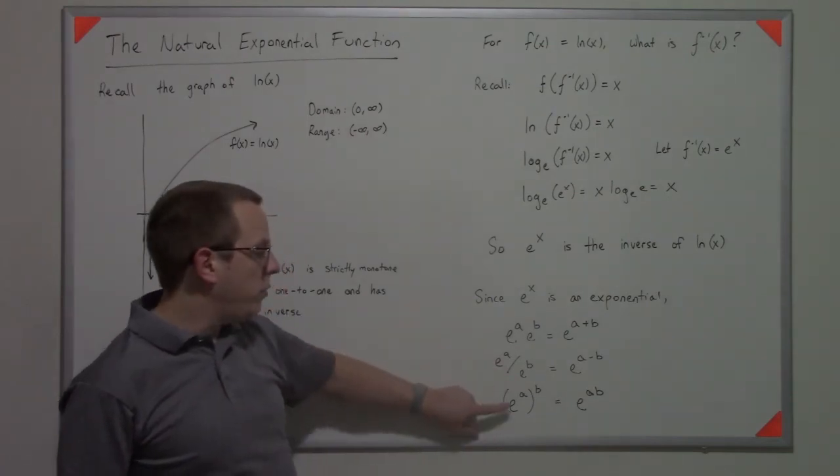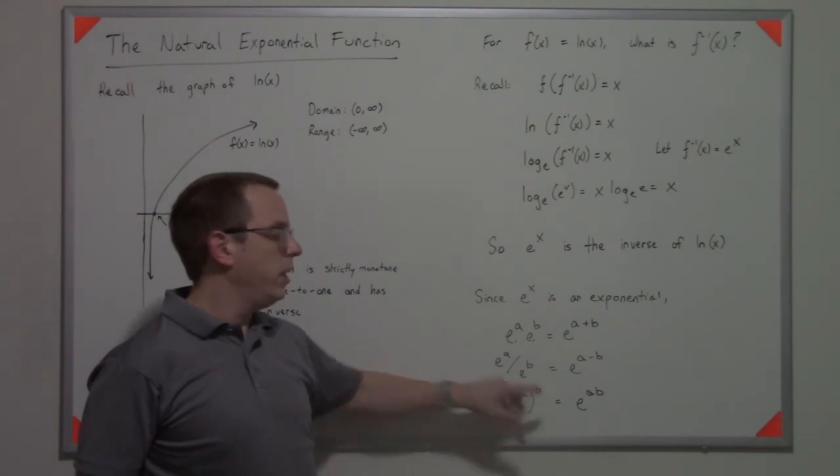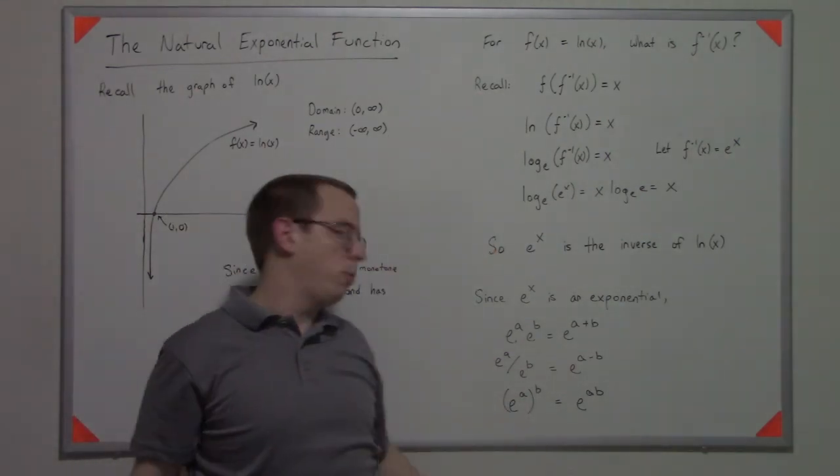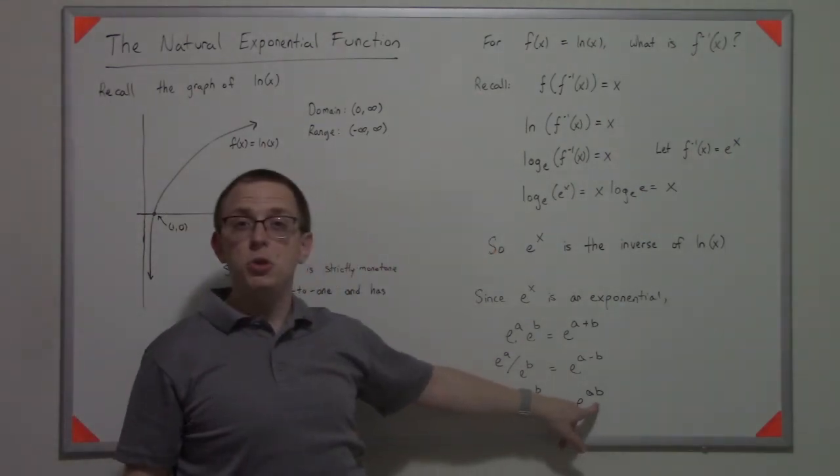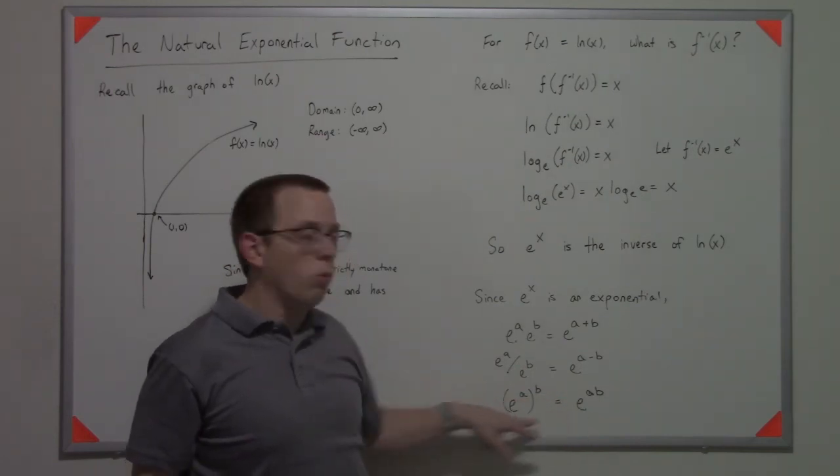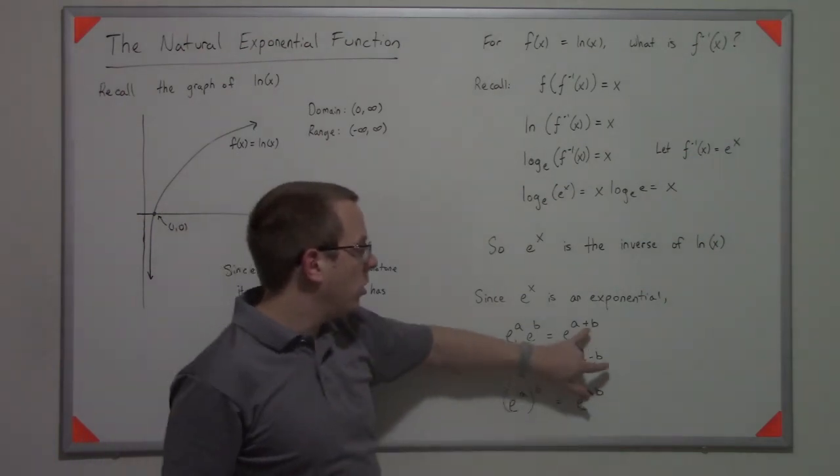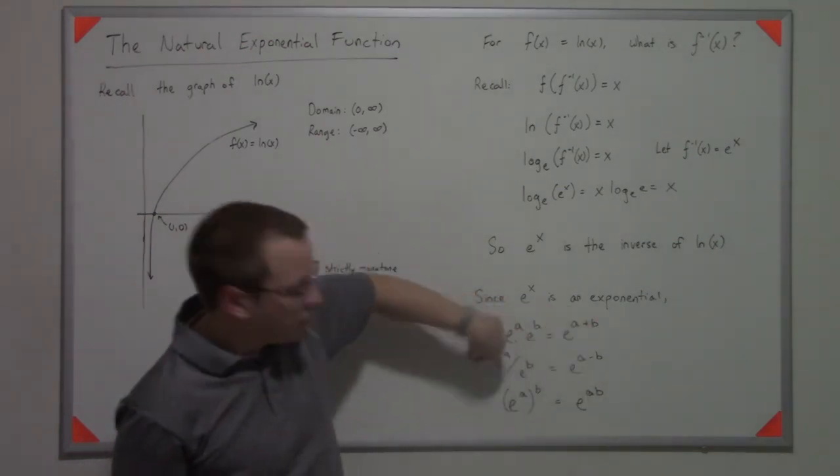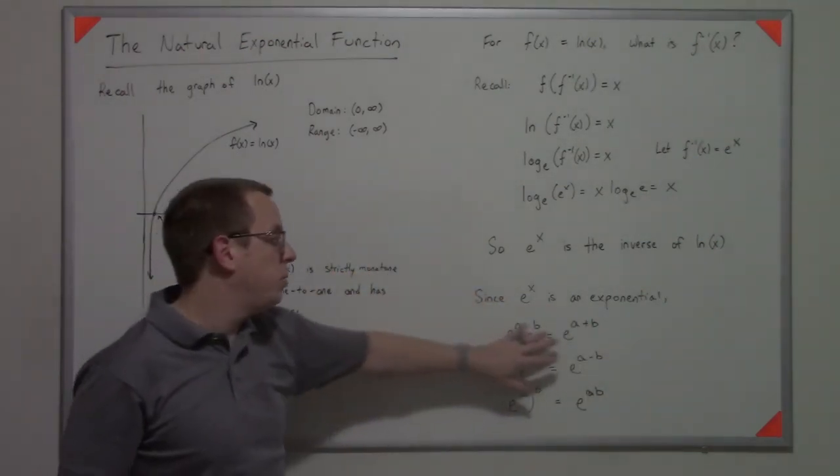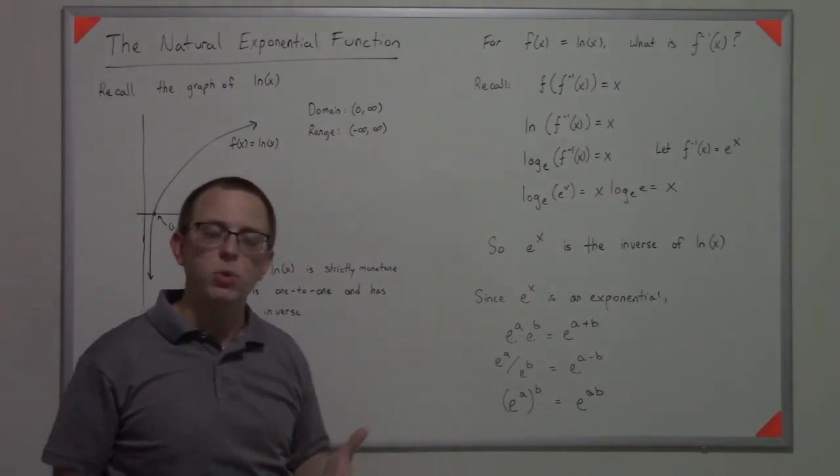And then finally, if you have e to a power and then in parentheses raised to another power, you can represent that as two powers multiplied together. Either one is often convenient to switch between. Generally speaking, you're going to go from right to left on these properties. Not always, but generally. That's kind of the way you solve problems.